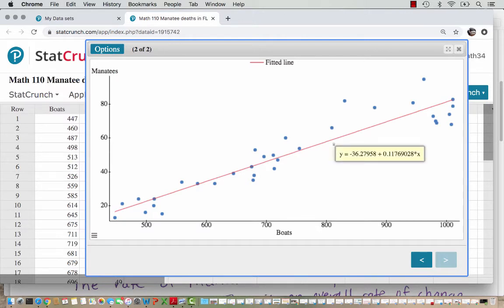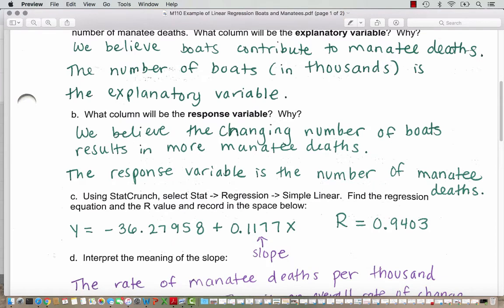I'm going to record the equation rounded to four decimal places. That's my usual habit. I've recorded down here in part C the equation, and it actually looks like I wrote the initial value or the starting value out to five decimal places. So you could round it to four places. And then we are adding the slope here times x, where x is representing the number of boats. And our correlation is 0.9403.